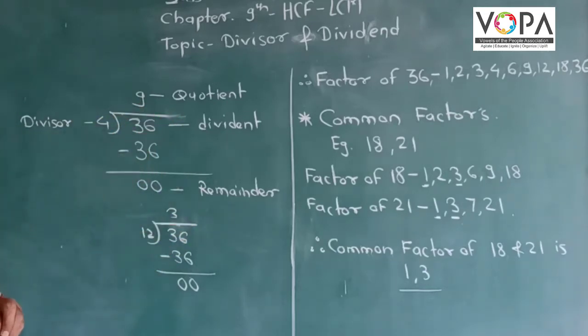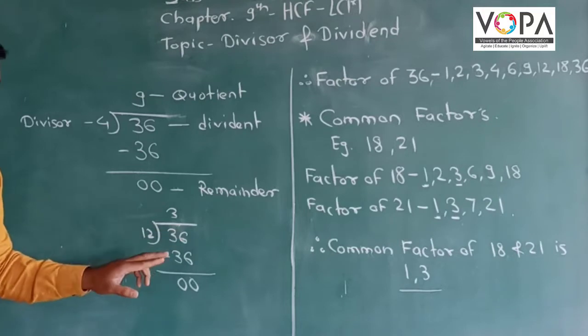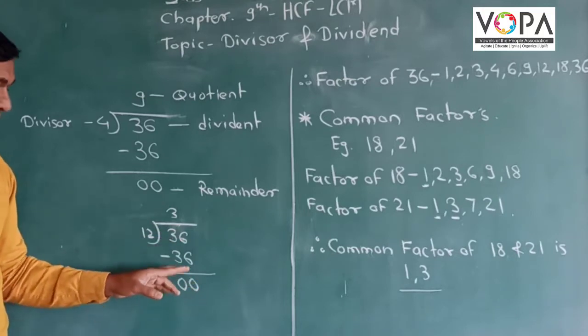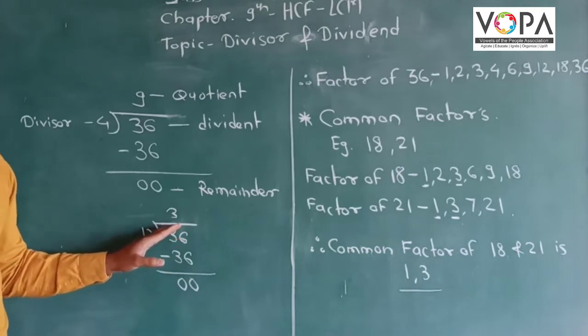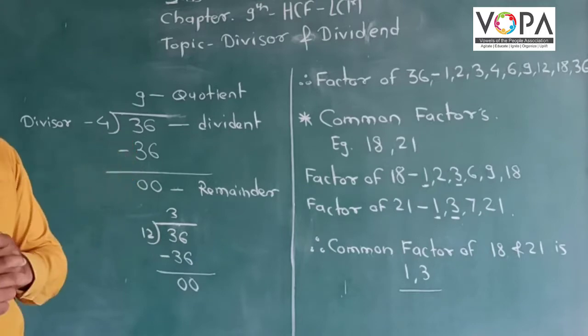Let's take another example. 36 divided by 12. 12 times 3 is 36. 36 minus 36 is 0. So once again, 12 is a factor of 36. And this way, we get a number of factors of that particular number.